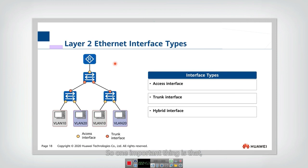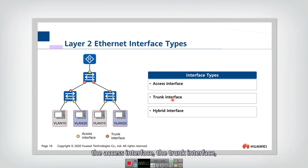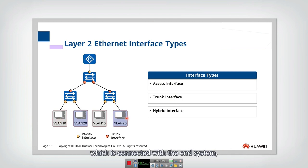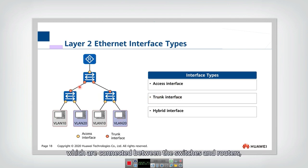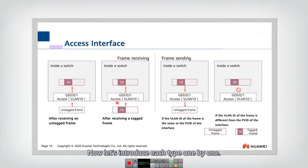Now we'll discuss some important details. For every interface, we should not only configure its VLAN ID but also its interface type. There are three different interface types: the access interface, the trunk interface, and the hybrid interface. The access interface is typically used for interfaces connected to end hosts. The trunk interface is used for connections between switches and routers. The hybrid interface is a combination of the functions of both types.